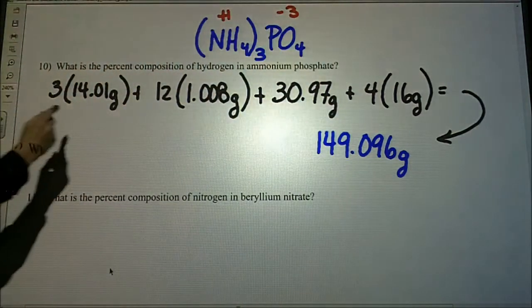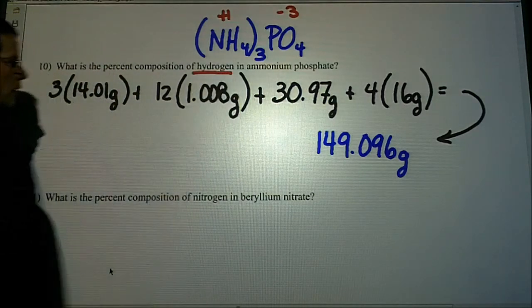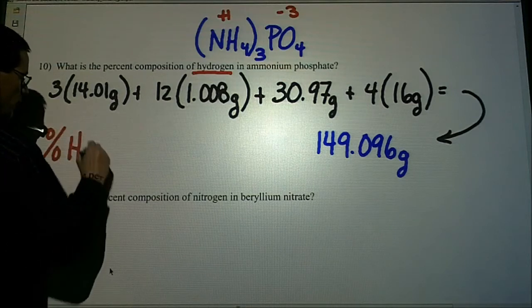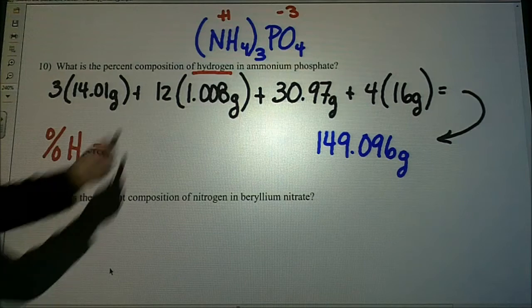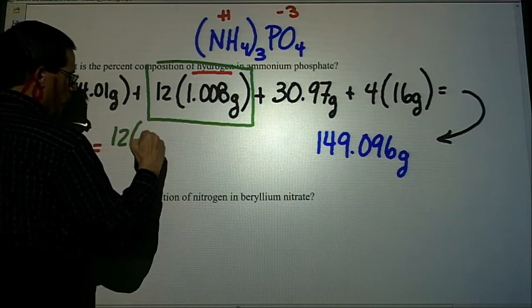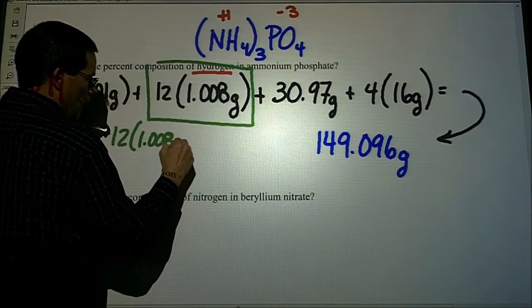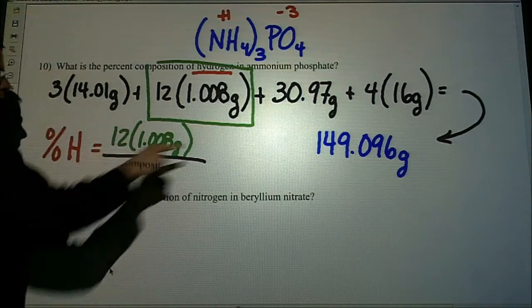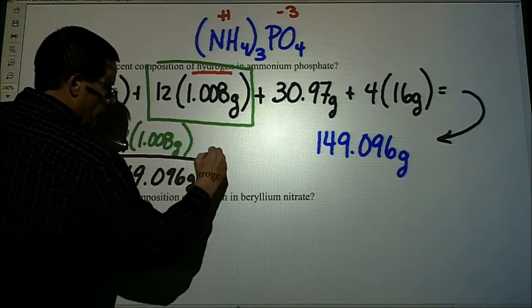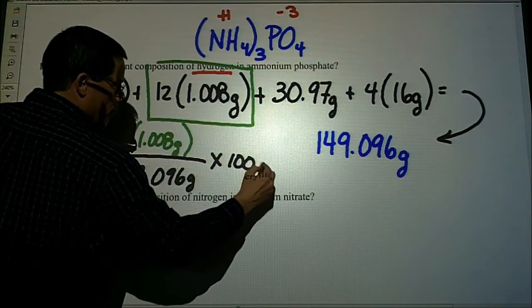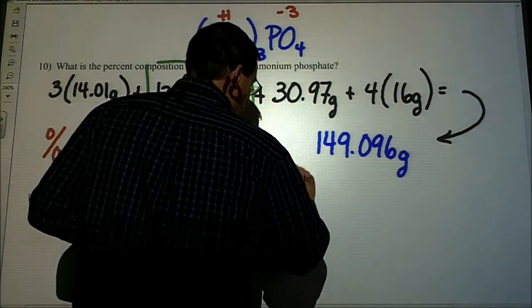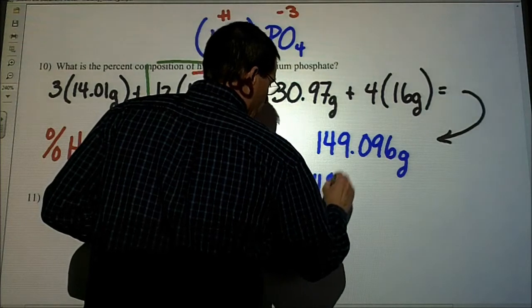The question wants to know, what is the percent composition of hydrogen? So what we're going to do is answer the question, how much of this is hydrogen? Well, here's our hydrogen right here. We'll have our 12 times 1.008 grams, and I'm going to divide that by what we just found, 149.096, and then multiply that by 100. So 8.11%.